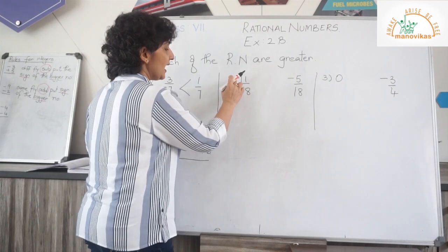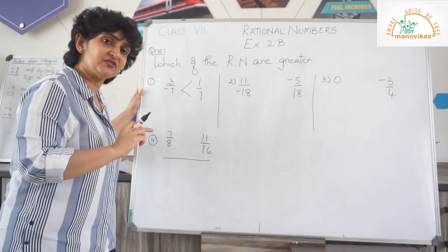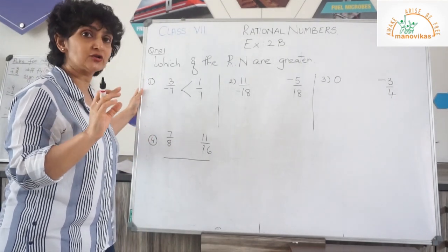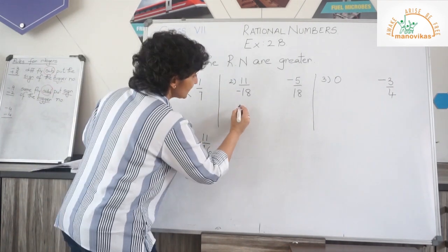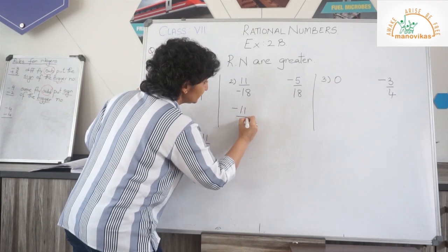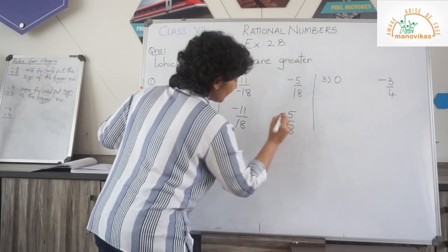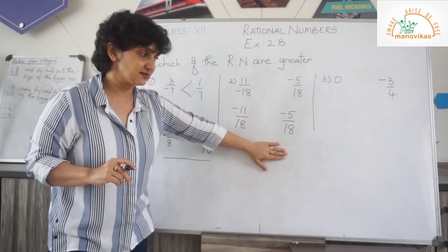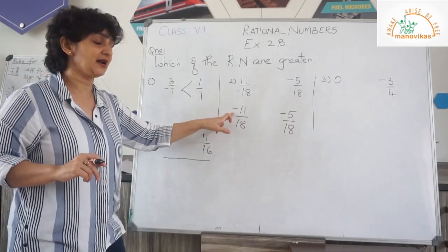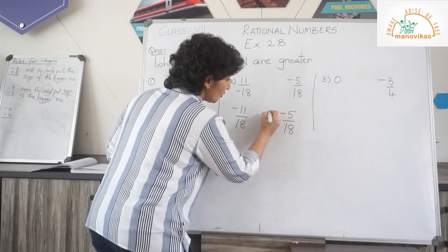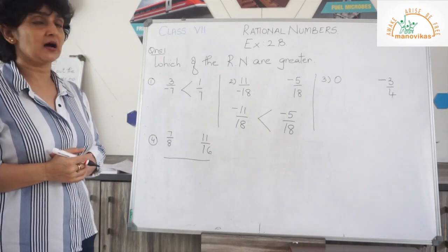Now here I have 11 upon minus 18 and minus 5 upon 18. In your previous class I already taught you how to make your denominators positive. So let's rewrite this as minus 11 upon 18 and minus 5 upon 18. Now your denominators are the same, so I know that minus 5 is definitely greater than minus 11. So minus 5 upon 18 is greater than minus 11 upon 18.